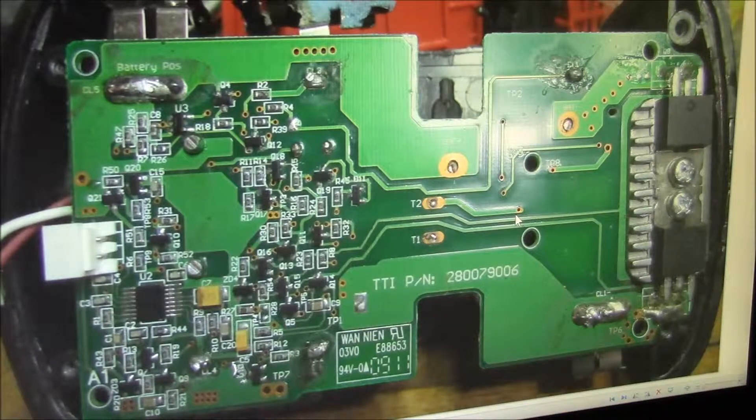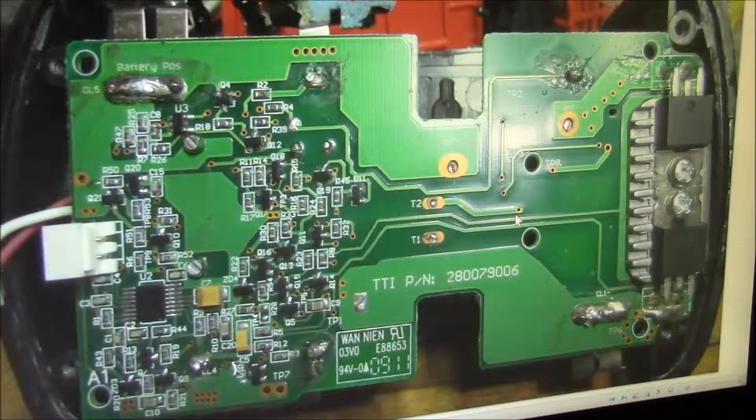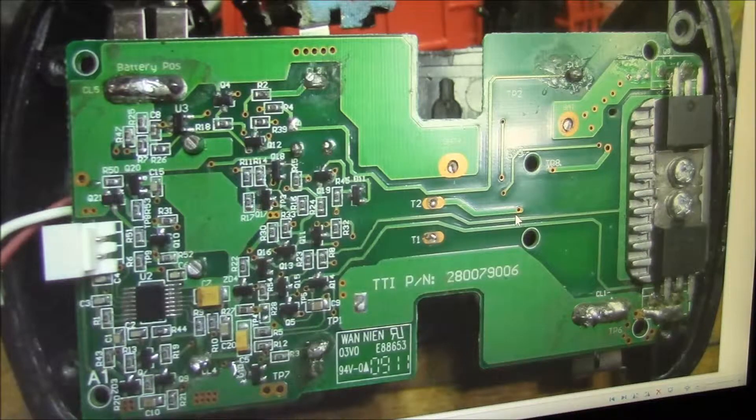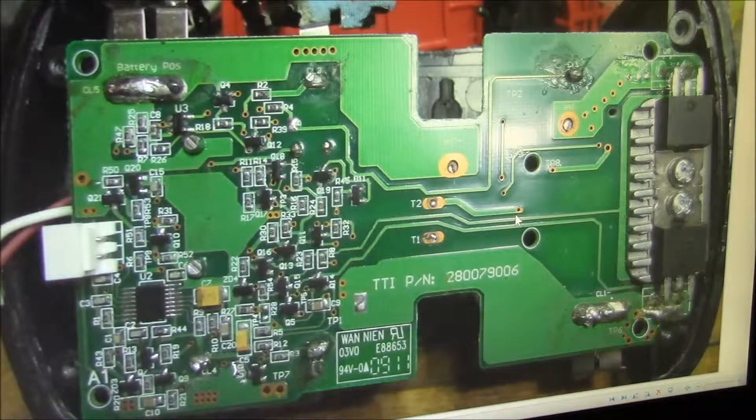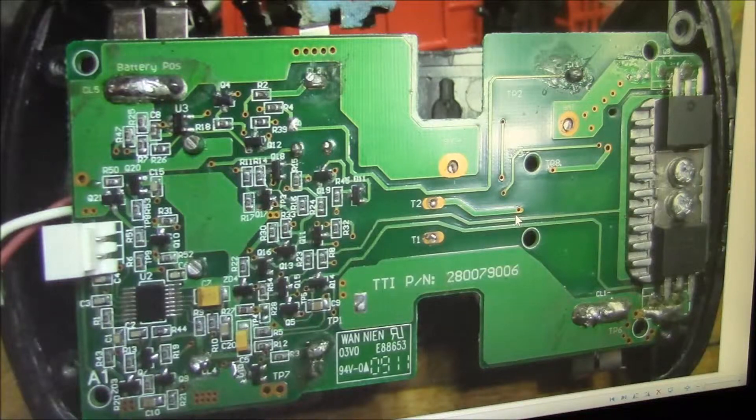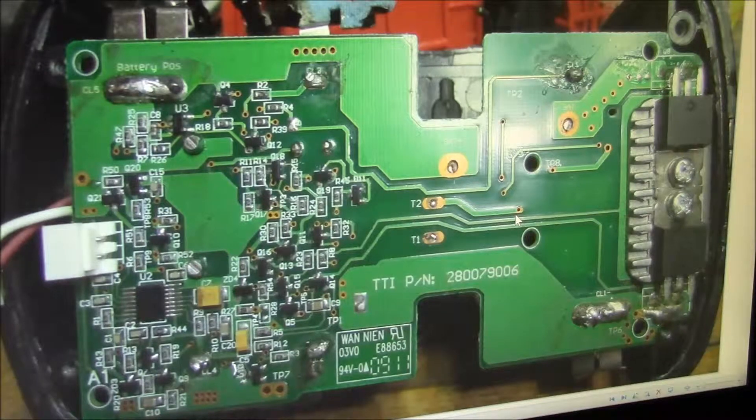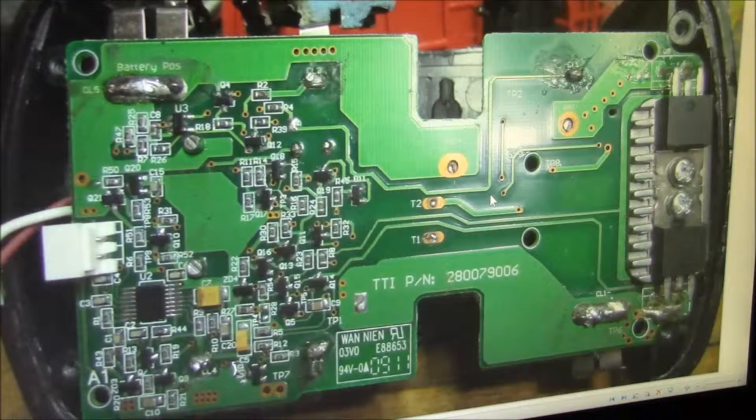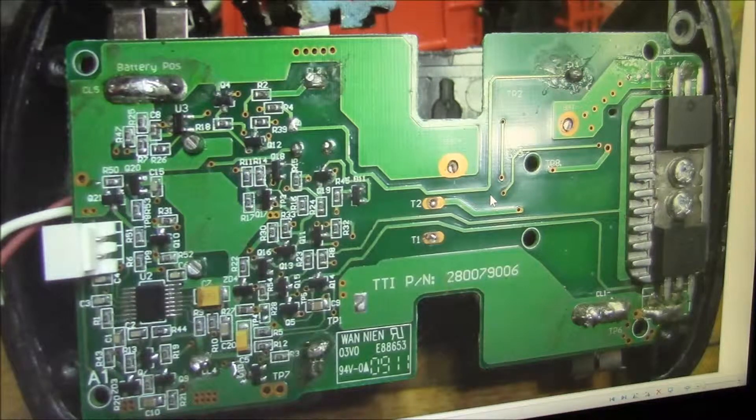I'll take a look at the earlier model extended capacity boards. They're simpler and not conformally coated so it's easier to identify part numbers. Actually the earlier boards seem to be more of a battery protection circuit than a full BMS.